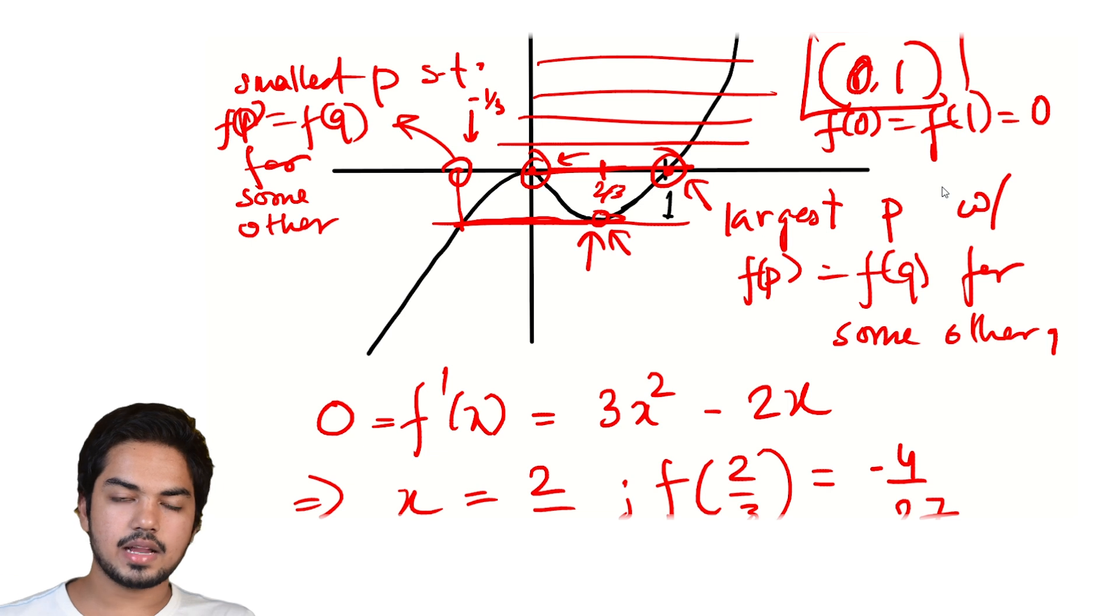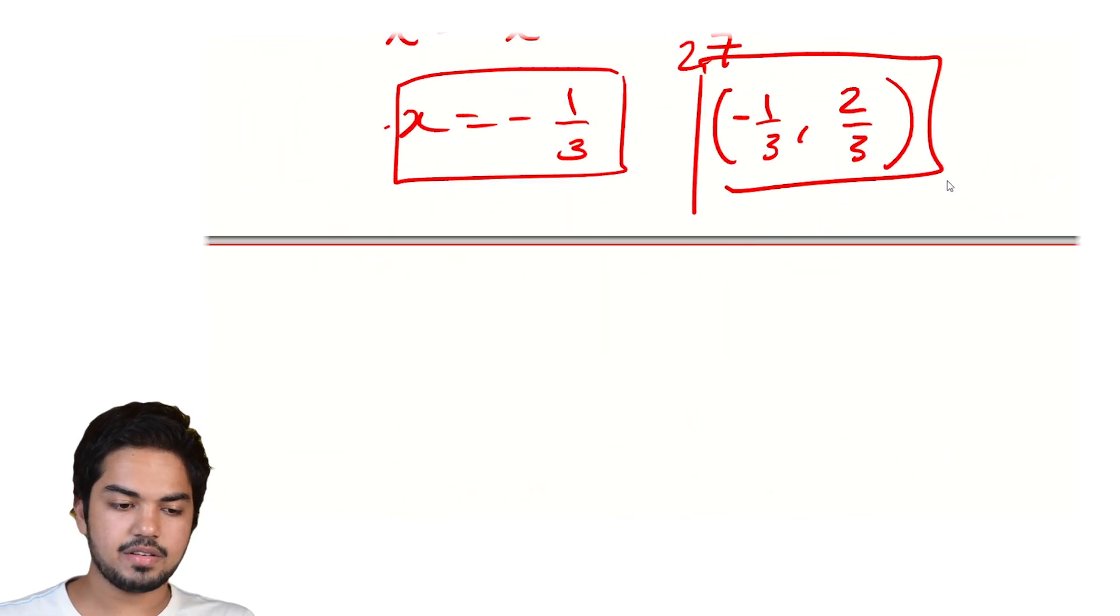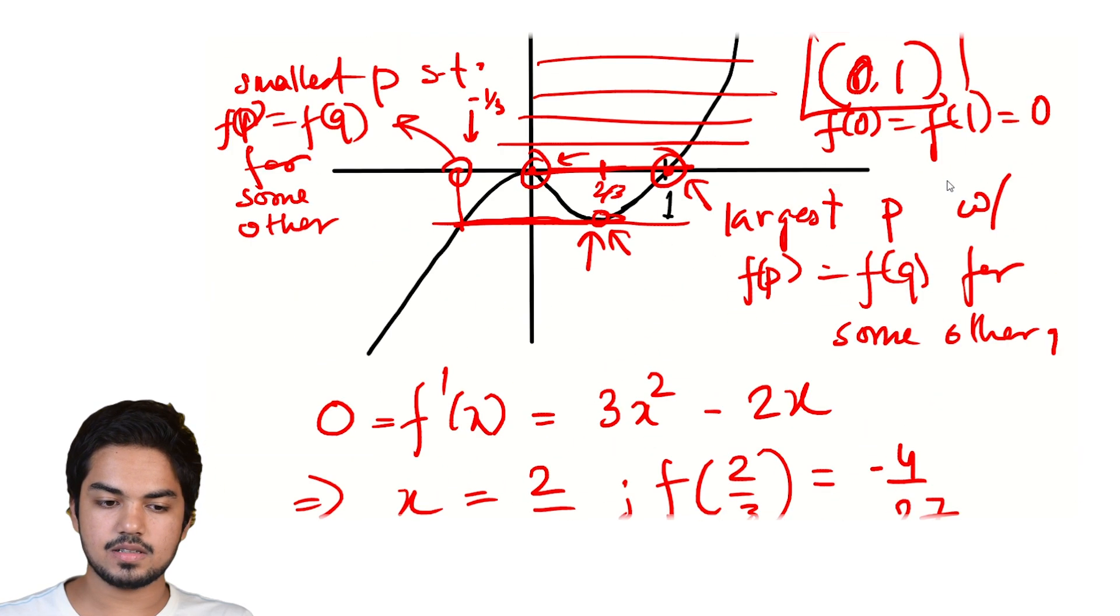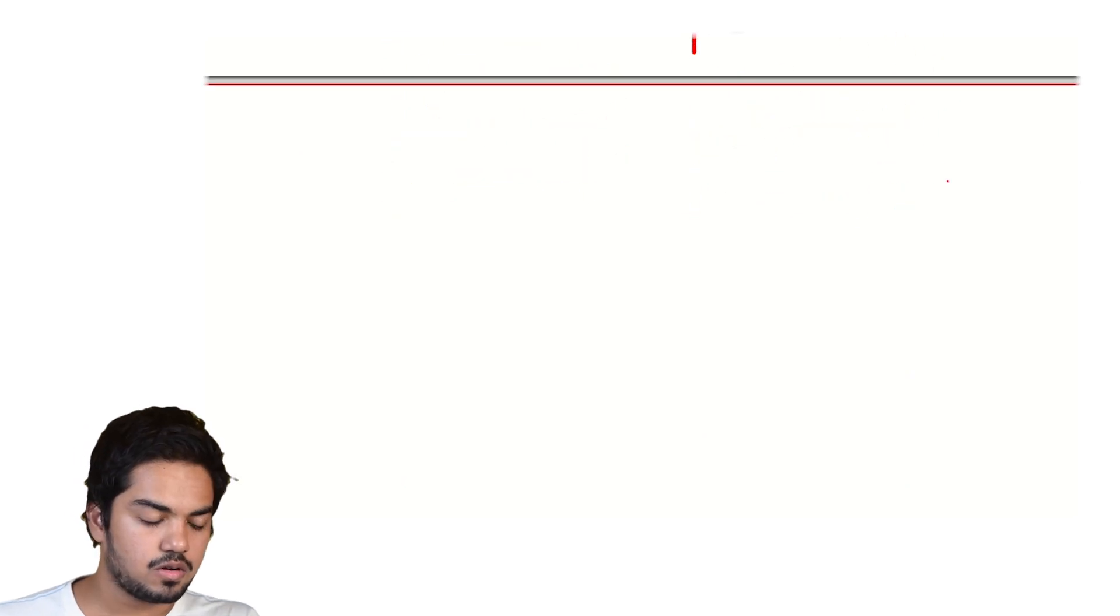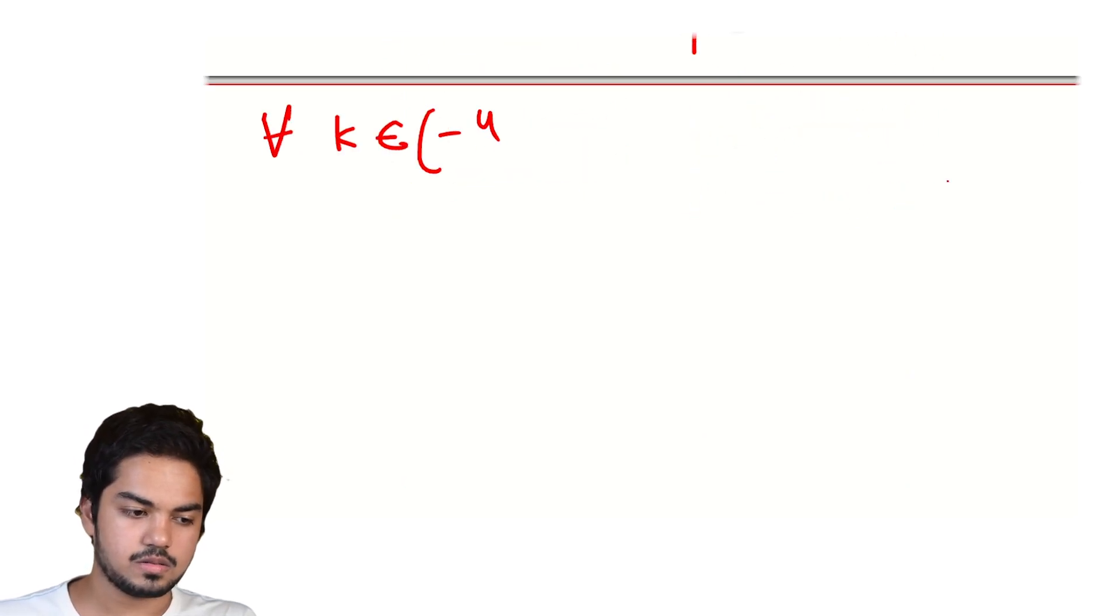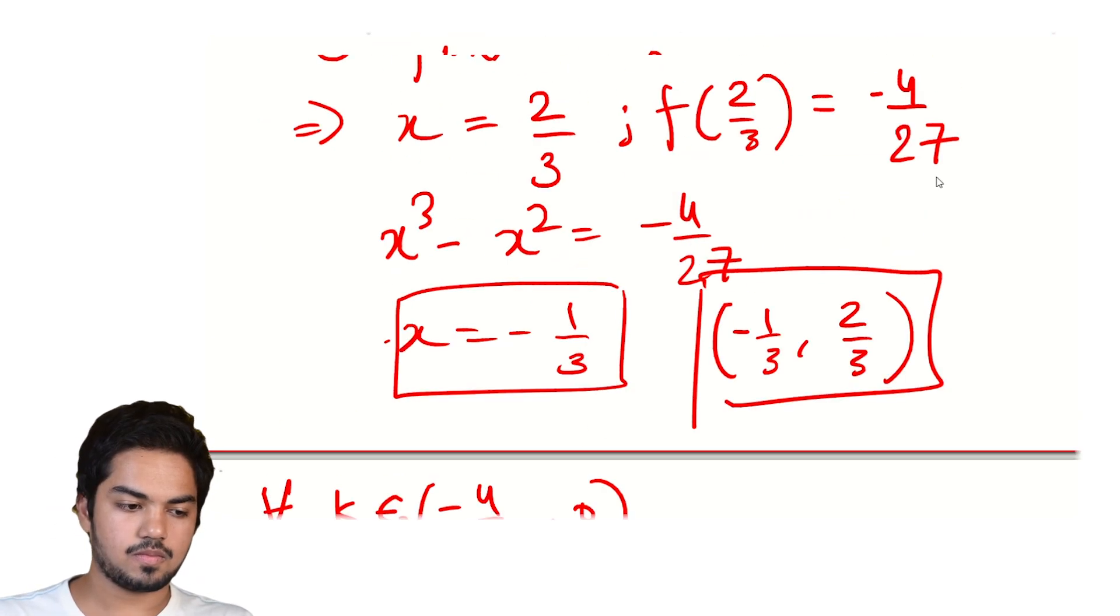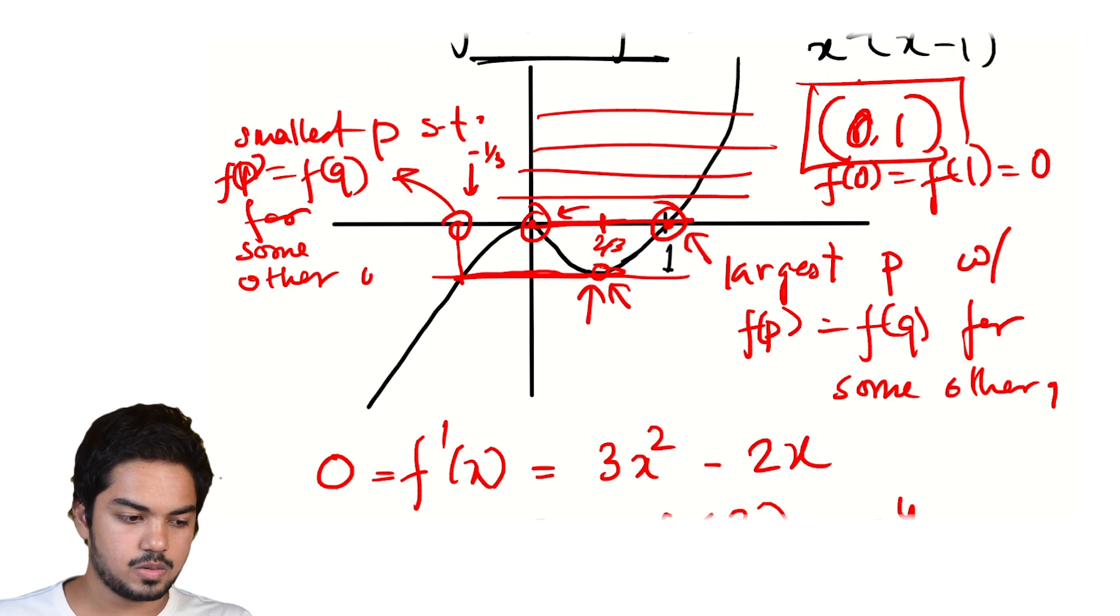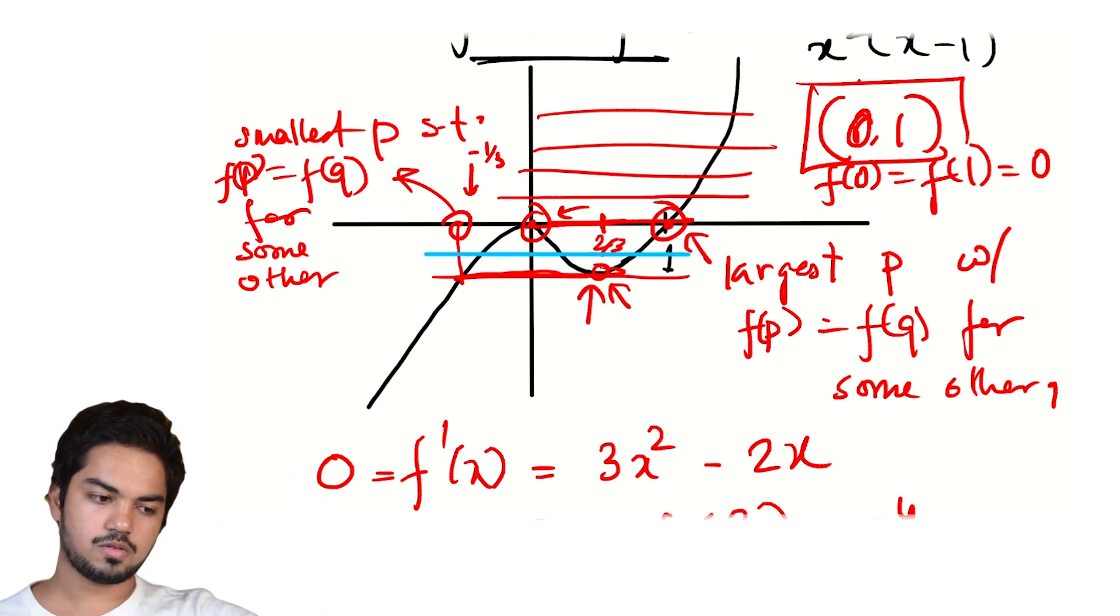What happens at every value of f between -4/27 and 0? For all K in the open interval (-4/27, 0), the horizontal line Y = K, we'll choose a slightly different value, say in blue.